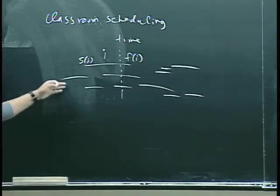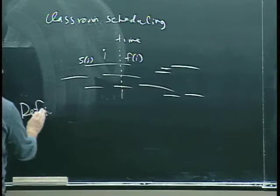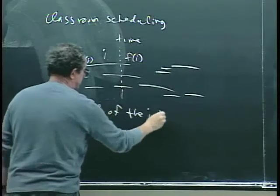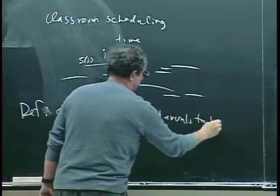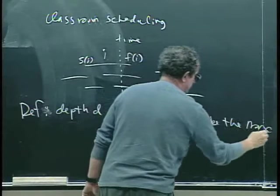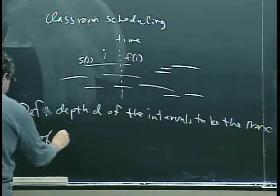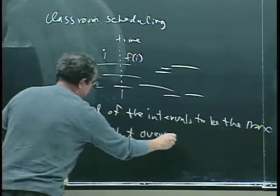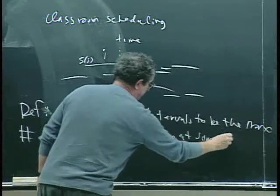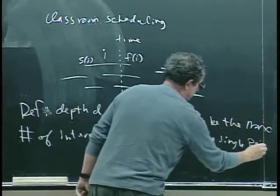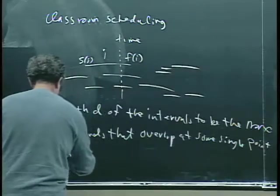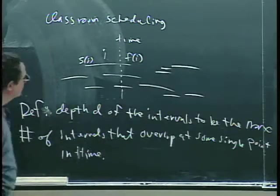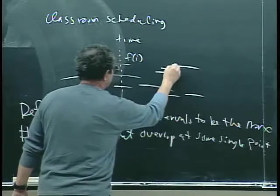So we can define the depth D of the intervals to be the maximum number of intervals that overlap at some single point in time. So if you just look at this, depending on whether we think these two overlap or not, let's just extend that a bit to make it clearer.